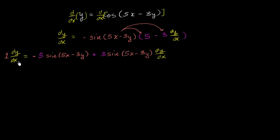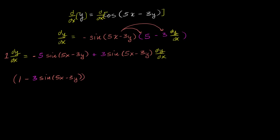Now we subtract 3 sine of 5x minus 3y from both sides. This is essentially a 1·dy/dx. So on the left-hand side we have 1 minus 3 sine of 5x minus 3y, all times dy/dx.